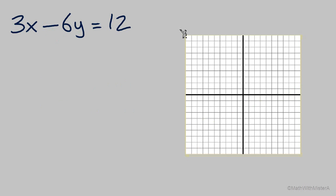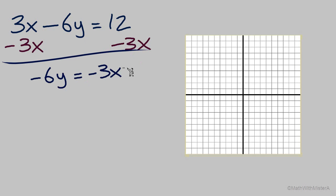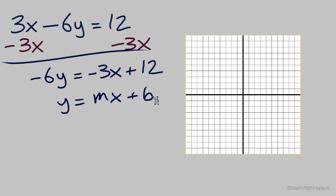This method for graphing linear equations is so useful that when we start with an equation not in y equals mx plus b form — when it's not solved for y — we might choose to solve for y so we can use the slope and the intercept. Remember that first we need to undo the term 3x with minus 3x on both sides. We'll have negative 6y equals negative 3x plus 12. I'm in the habit of writing the variable term first to match the y equals mx plus b form, which helps us remember the constant is the y-intercept and the coefficient of x is the slope.